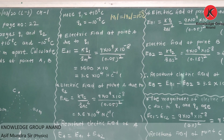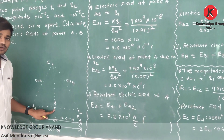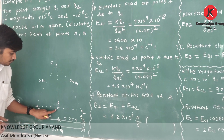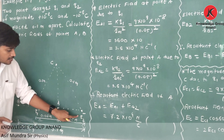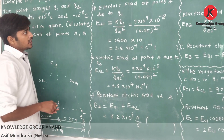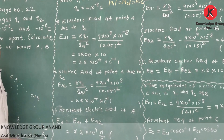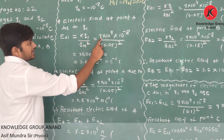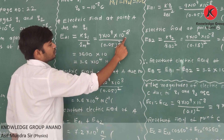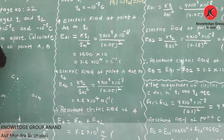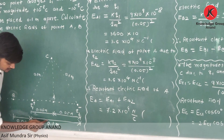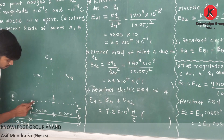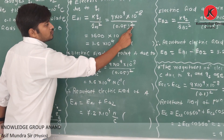Now, electric field at point A. You have to ask one simple question: at point A, electric field is due to which charges? Charges are q1 and q2. So first we will find electric field at point A due to q1. eA1, the magnitude, is equal to k·q1 / rA1 squared. k is 9 into 10 raised to 9, q1 is 10 raised to minus 8. Distance rA1 is distance between A and q1. A is on the midpoint, so this distance is 0.05 meter. So rA1 squared is 0.05 whole square.